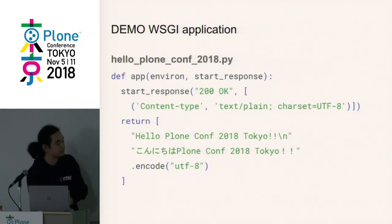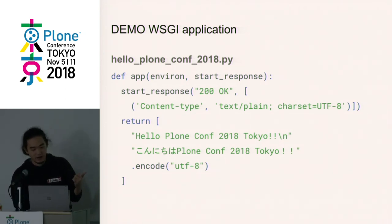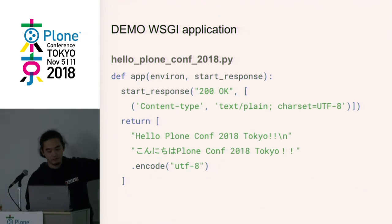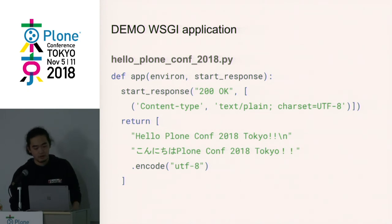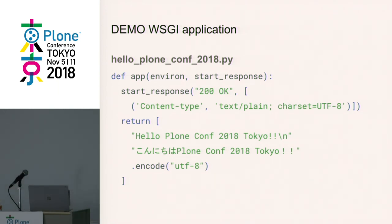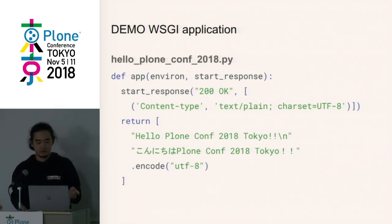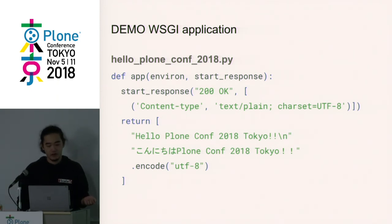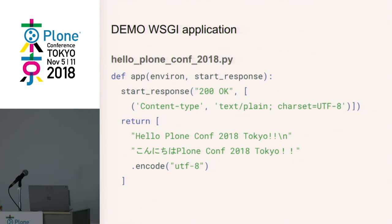This is the demo. This WSGI application outputs Japanese text, which is multibyte. It outputs 'Hello PloneConf 2018 Tokyo' and in Japanese: 'Konnichiwa PloneConf 2018 Tokyo'. It encodes the string to UTF-8 bytes. It adds charset=UTF-8 to the header.